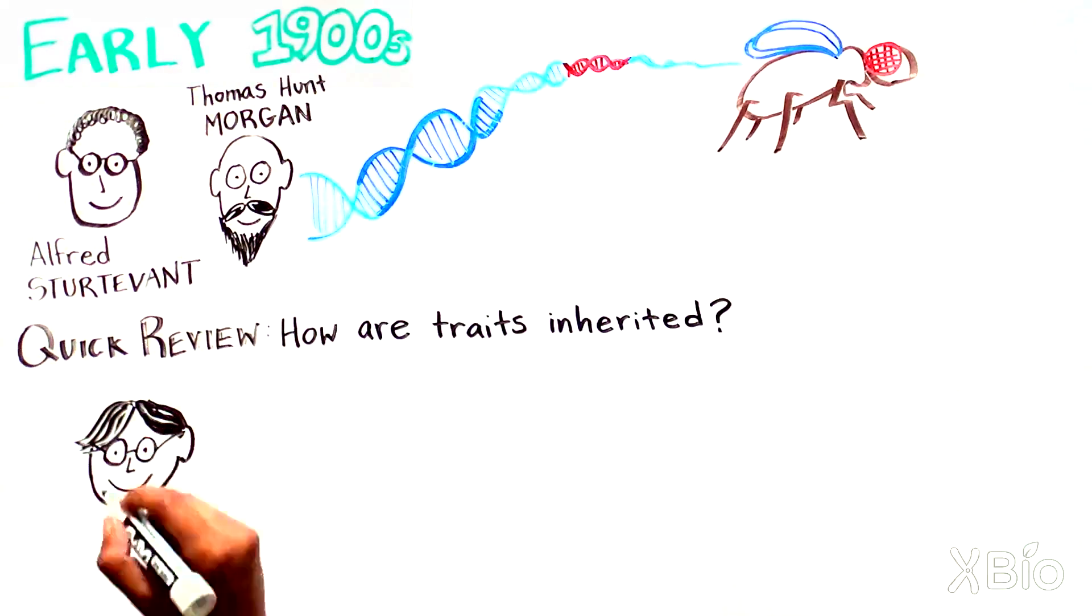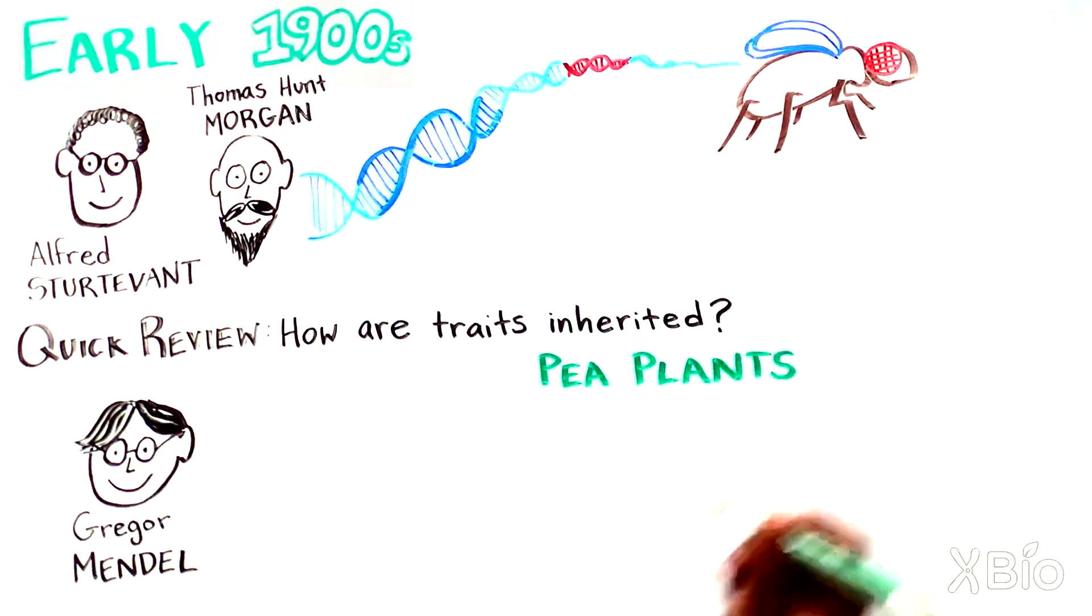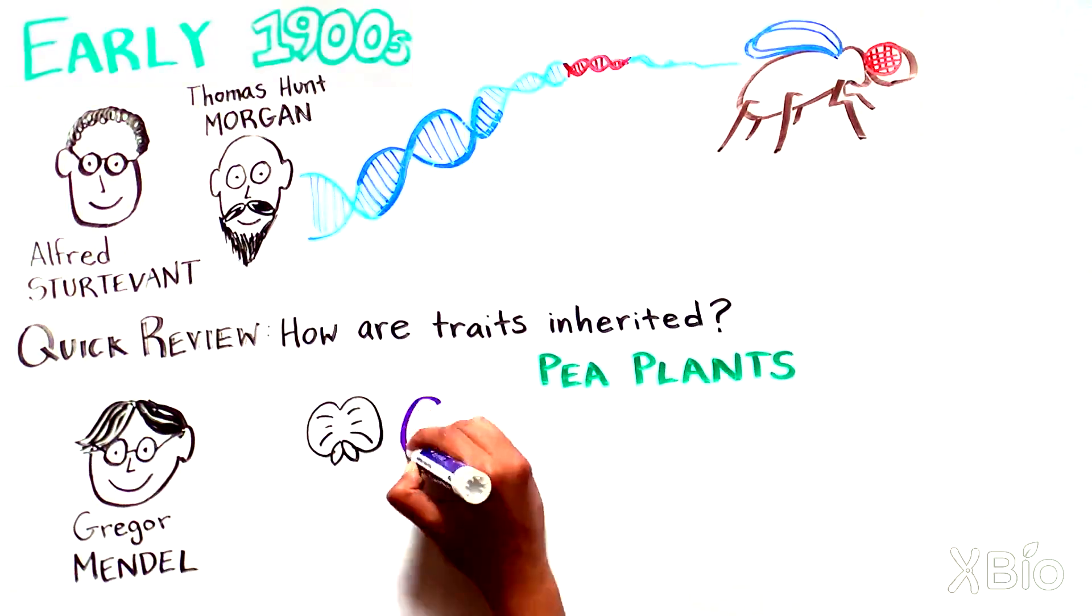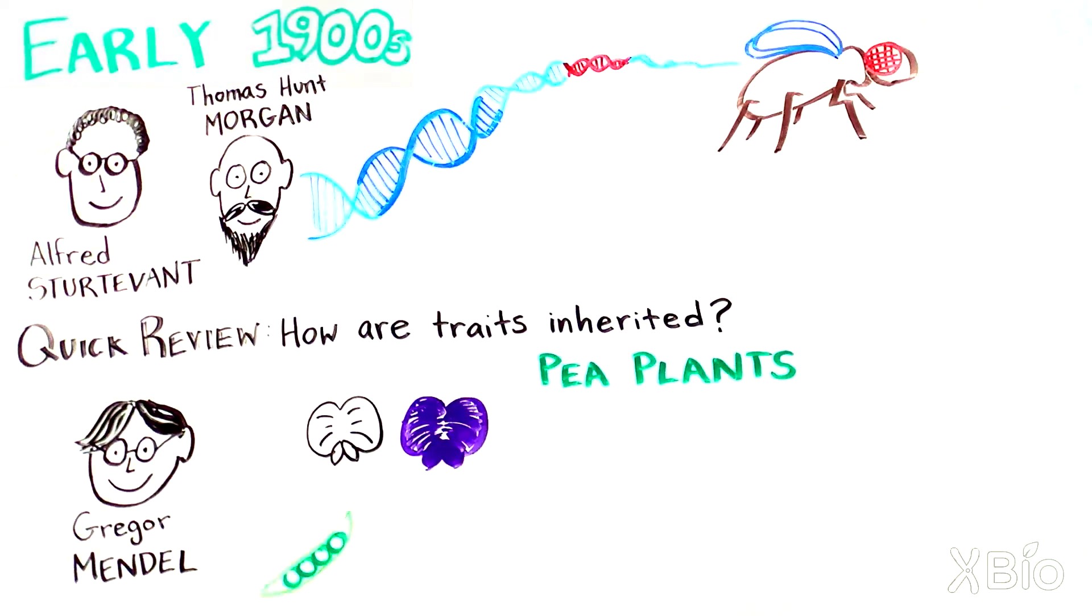50 years earlier, Gregor Mendel, a monk who performed experiments on pea plants, noted that traits like whether the plant's flowers were white or purple in color or whether the peas were round or wrinkled in shape,